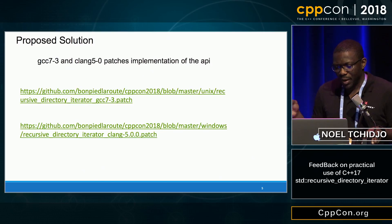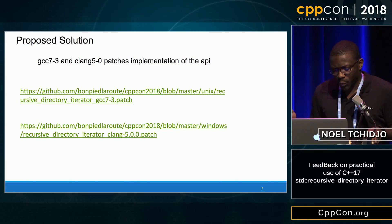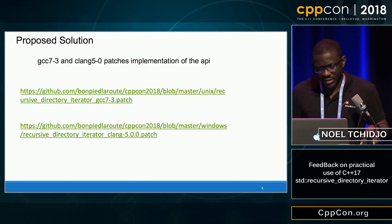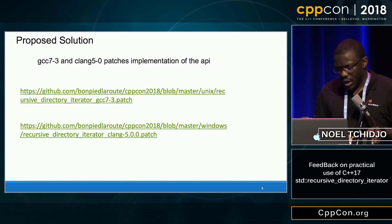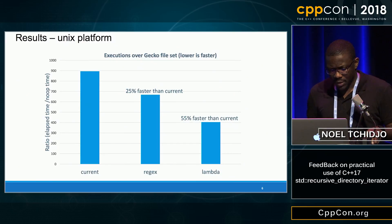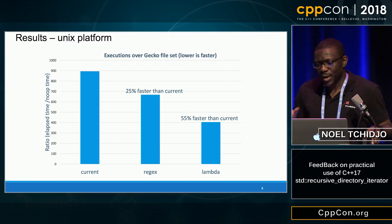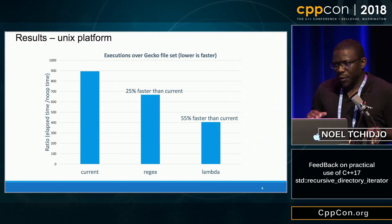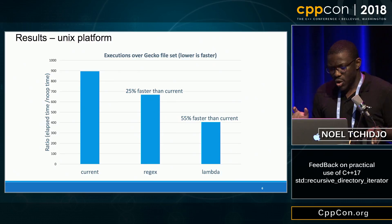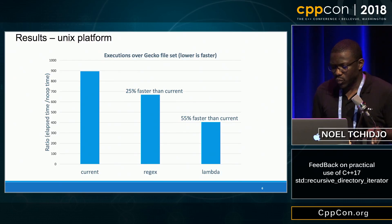In order to perform tests, we have implemented these two API proposals on GCC and Clang, and patches are available on GitHub. We have run a directory traversal program over several open source projects, and here we want to share a few results.